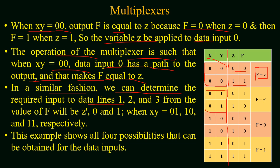When x and y both equal 0 and 1, the function equals z prime, because when z equals 0 the function has a value of 1 and when z equals 1 the function has a value of 0. In the third case, when x and y equal 1 and 0, the function has a value of 0 regardless of whether z is 0 or 1. Similarly, in the last case when x and y both equal 1, the function has a value of 1. This example shows all four possibilities that can be obtained for the data inputs.